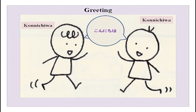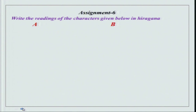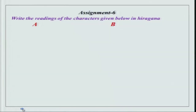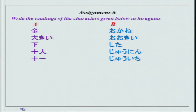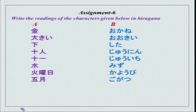Before we actually start doing something new in Japanese, we will go back to our assignments. You can check your assignments and see what you have done is correct or not. Write the readings of the characters given below in hiragana. It is very important to learn hiragana as well because this is a new script. We are doing it in roman, but it is essential to be able to write in hiragana and kanji. The words are: okane, ooki, shita, jiunin, jiuchi, mizu, kayoubi, gogatsu, hon, ichinichijuu. Practice these.